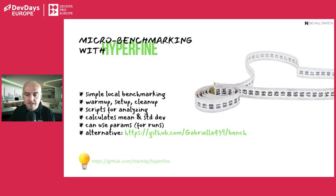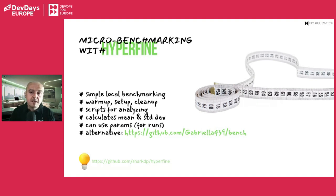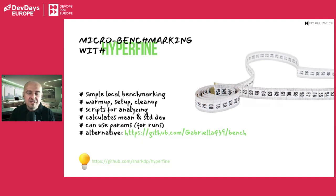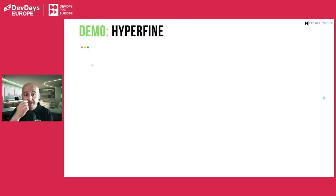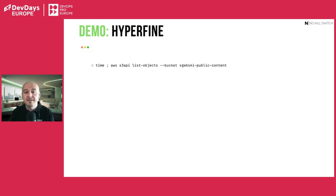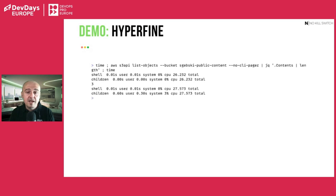Let's look at a different scenario: when you're making experiments and want to micro-benchmark — measuring typical latencies, verifying if you're hitting your goals. Typically we use 'time' in the console, but there's a better way called Hyperfine. It's a tool for micro-benchmarking that's not super sophisticated but very useful. Instead of running 'time' manually, you embed your command in Hyperfine and it executes it — by default 10 times — and reports basic statistics: mean, standard deviation, min, and max.